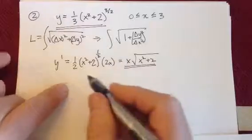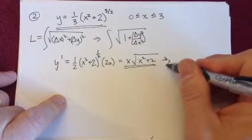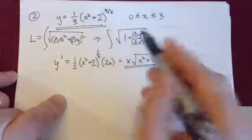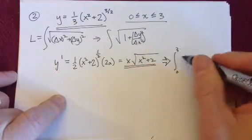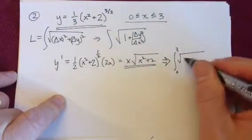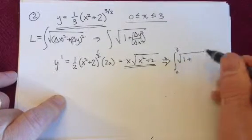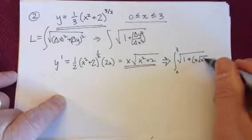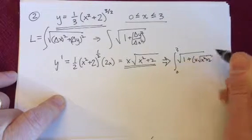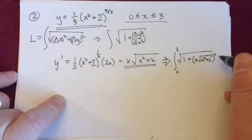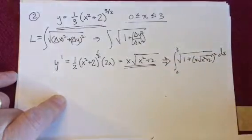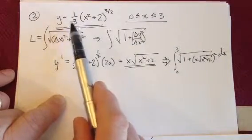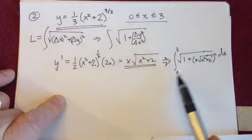And that's going to go into my integral here, where I'm going to integrate from 0 to 3, and it's the square root then of 1 squared is 1, plus then x radical x squared plus 2 squared, and then dx. So it's just 1 plus the derivative of your function squared, all under the radical, and then we integrate.